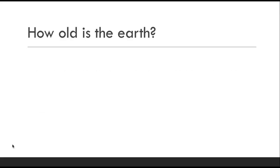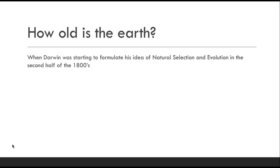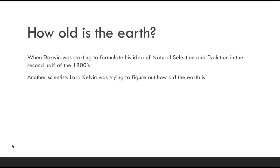Once we start figuring that out, the next question is: how old is the Earth really? Of course, we are pretty familiar with the name Charles Darwin. He took this long trek on the HMS Beagle to be a naturalist, and he was starting to formulate this idea of natural selection and evolution, occurring in the second half of the 1800s.